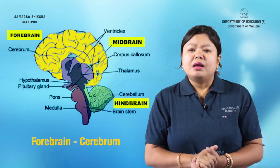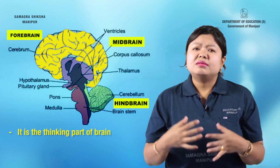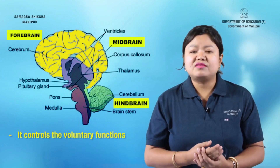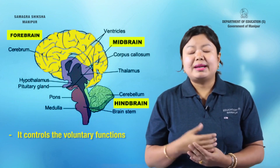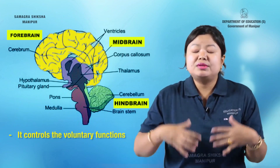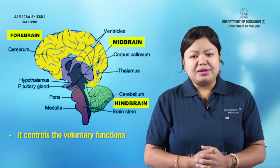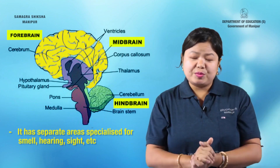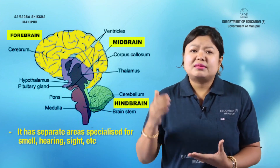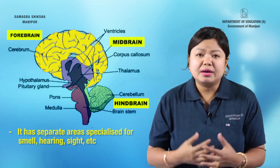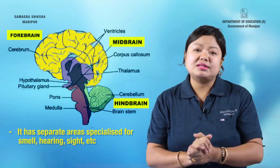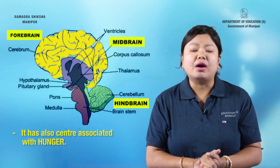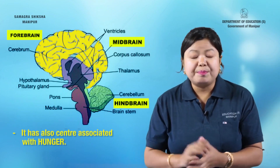The forebrain is the thinking part of the brain. It controls voluntary functions. There are separate areas in the forebrain that control smell, hearing, and other senses. It is also a center associated with hunger.